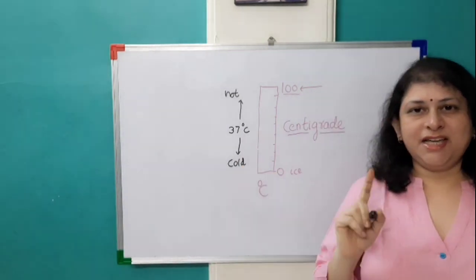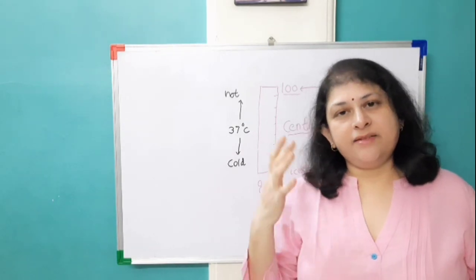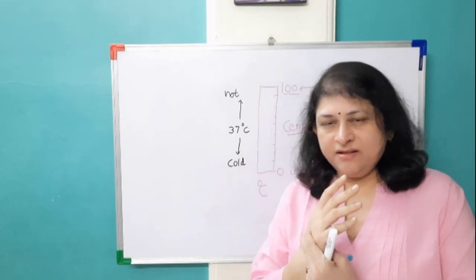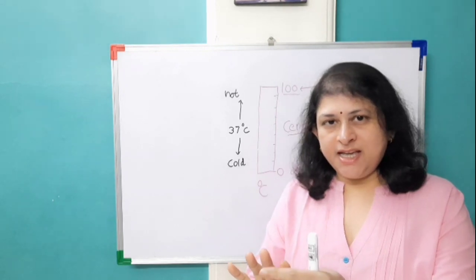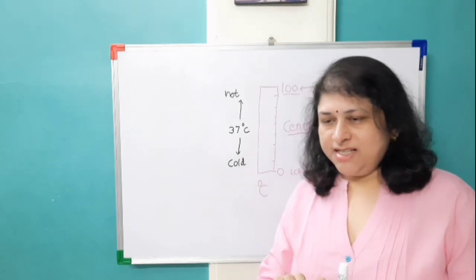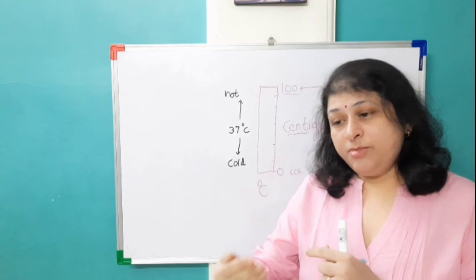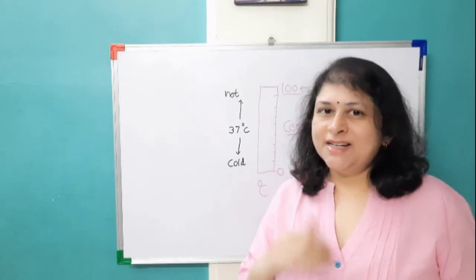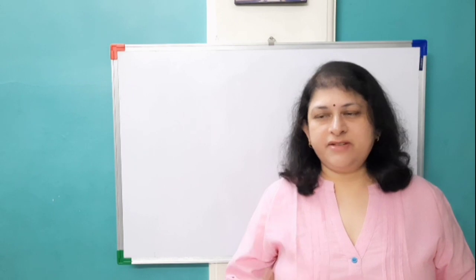Anything which is below 37 degree centigrade is considered cold. From here we came to know that hotness or coldness is a relative term. Our body has a sensory system and the temperature of our body is 37 degree centigrade. When we touch anything, it measures whether the temperature of the object is more than or less than 37 degree centigrade. If we feel it hot, the temperature of the object is more than 37 degree centigrade; if we feel it cold, it is less than 37 degree centigrade. So temperature is a relative term.